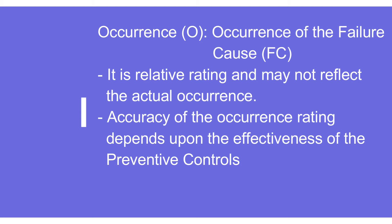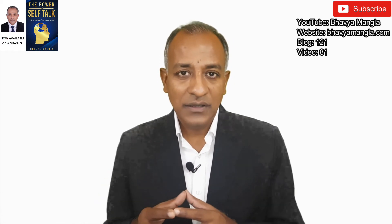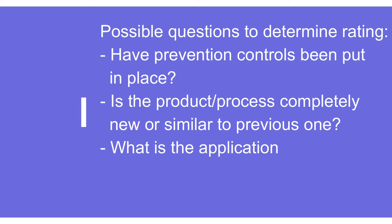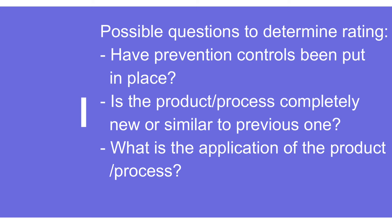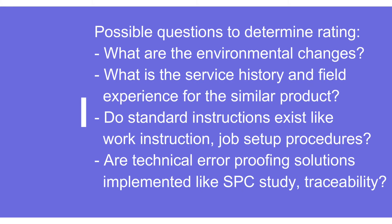Occurrence primarily talks about the effectiveness of the preventive controls already in the organization. Some questions a CFT team can ask while working on FMEA: Is a preventive control in place? Is this a new product or process, or similar to an earlier one? What is the application of this product or process? Is there any environmental change? What are the field returns or internal and external rejections? Are standard work instructions, job setup instructions, and process monitoring available? Is any foolproofing technique already in place?